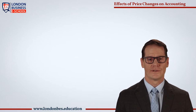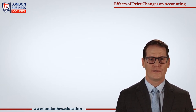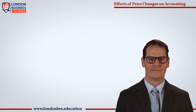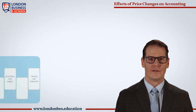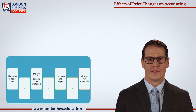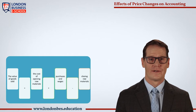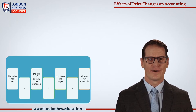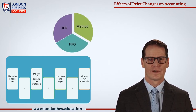Effects of price changes on accounting: the change in price level does not affect profit and loss account items such as wages and salaries, insurance, commission, and tax, as these are paid on current values. The items which do affect the profit and loss account include cost of goods sold — the value of goods sold equals opening raw materials plus purchases and wages minus closing raw materials. The problem is determining at what price stores should be valued: LIFO method, FIFO method, or replacement cost method.